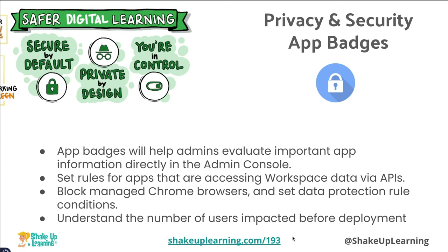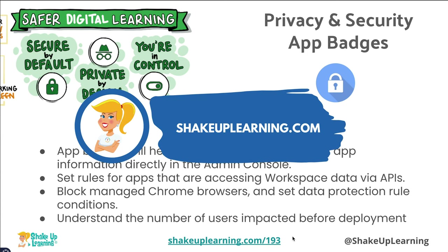There's also the ability to set rules for apps accessing Workspace data via APIs. APIs allow one thing to talk to another, and we have to be careful — for example, ChatGPT has an API and apps are already working inside Google Workspace. If you're in charge of data for your school, you want to know what apps are accessing it. You can also block managed Chrome browsers and set data protection rule conditions, understanding how many users will be impacted before deployment. There's so much going on — I'll go more in depth in the podcast at shakeuplearning.com. Subscribe to the Shake Up Learning YouTube channel for more!